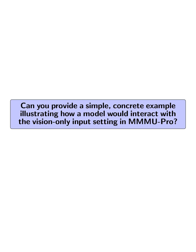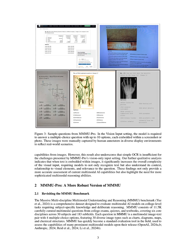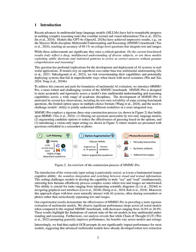Can you provide a simple, concrete example illustrating how a model would interact with the vision-only input setting in MMMU Pro? In the vision-only input setting of MMMU Pro, a model is presented with a question embedded within a screenshot or photo without any explicit text input. For example, a model might encounter an image of a scientific diagram that includes both visual elements and a question about the relationships depicted in that diagram. The model must analyze the visual context, recognize any text within the image, and understand how the text relates to the visual components to answer the question correctly. This setting challenges the model to integrate visual and textual information seamlessly, mirroring how humans typically process such information in real-world scenarios. The complexity arises because the model must not only extract text, but also comprehend its relevance and context within the image, which significantly increases the difficulty compared to traditional text-only inputs.